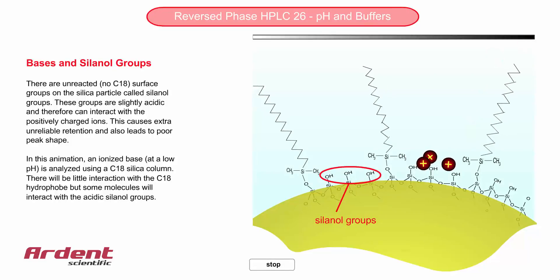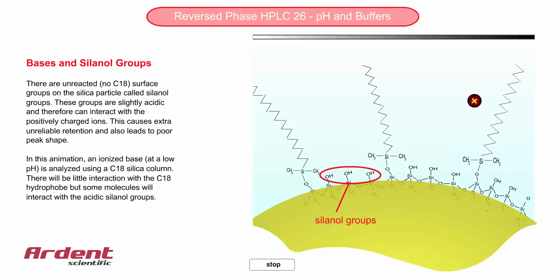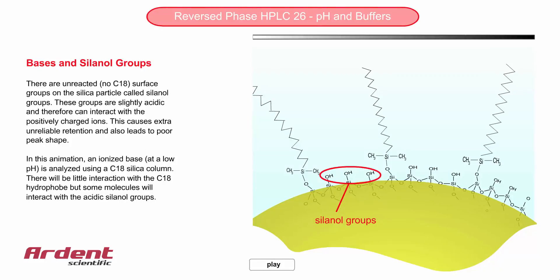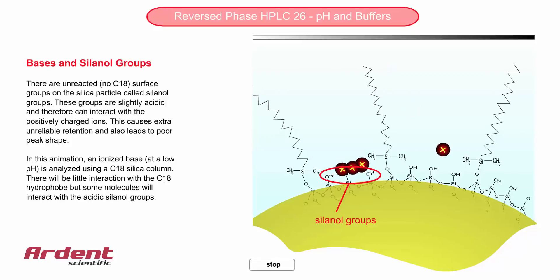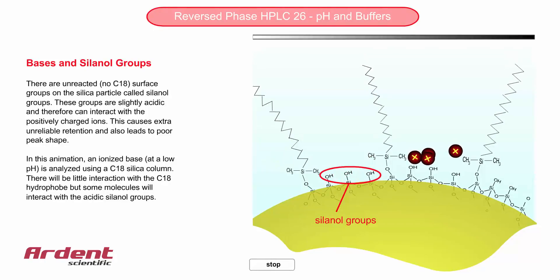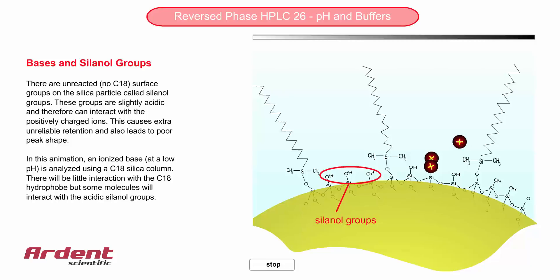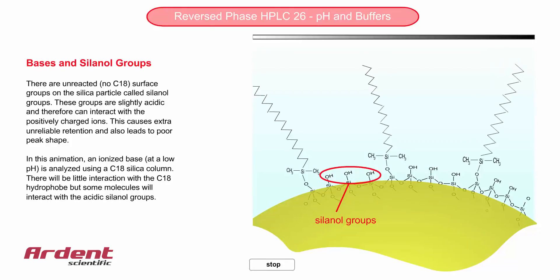For the analysis of acidic and neutral compounds, the presence of these unreacted silanols is not a problem. But basic compounds can interact with these silanol groups, because the silanol groups are weak acids. In this animation, the pH is low, and we are analyzing a base which will exist in the protonated or ionized state.